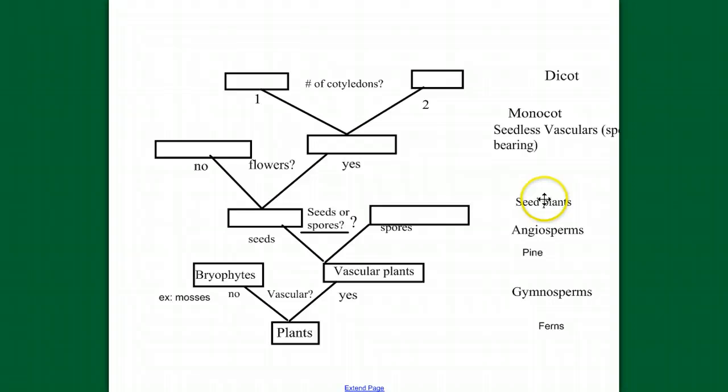And if the answer is seeds, they're seed plants, and we continue on. But if the answer is spores, then we have our spore-bearing vasculars. For example, our ferns. And that's where we are today, talking about the seedless vascular plants.